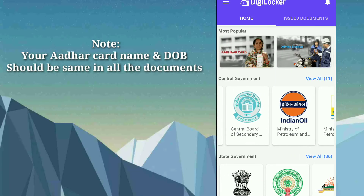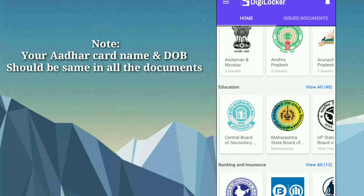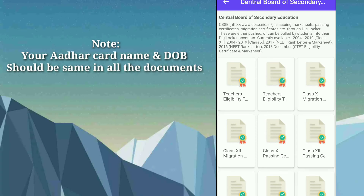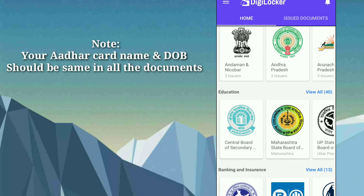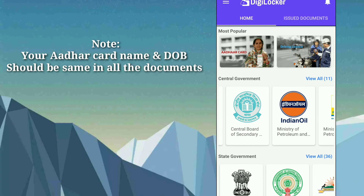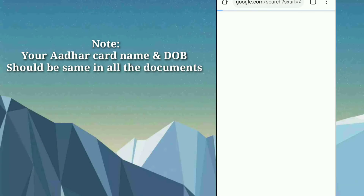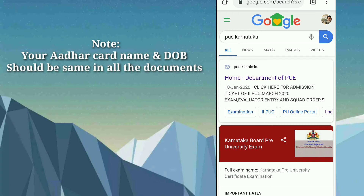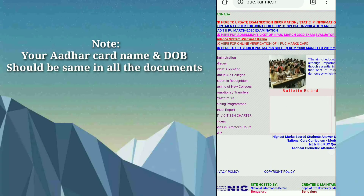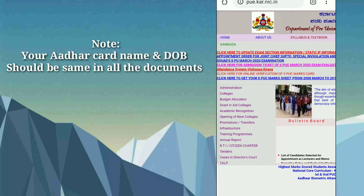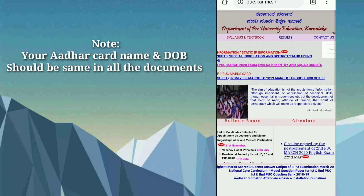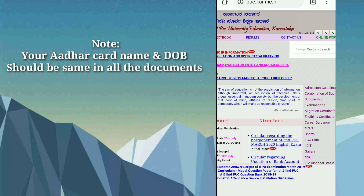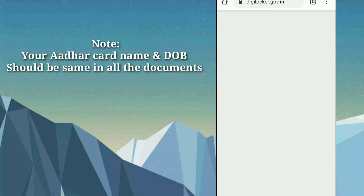You can also see categories here — Central Government, State Government, and Educational. For example, under Central Board of Secondary Education, you can get all those documents. Make sure your document is linked with your Aadhaar card. You can also get a PUC mark sheet here — it mentions you can get the second PUC mark sheet from 2008 March to 2019 March through DigiLocker.